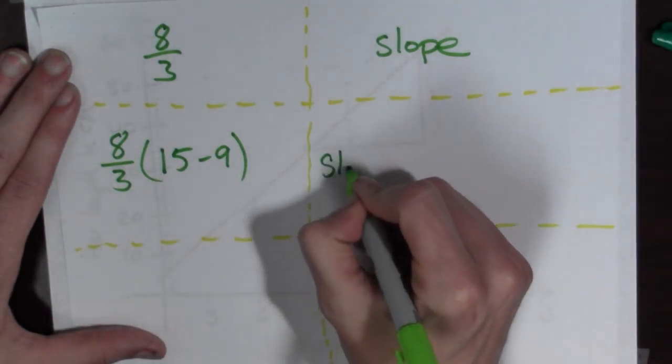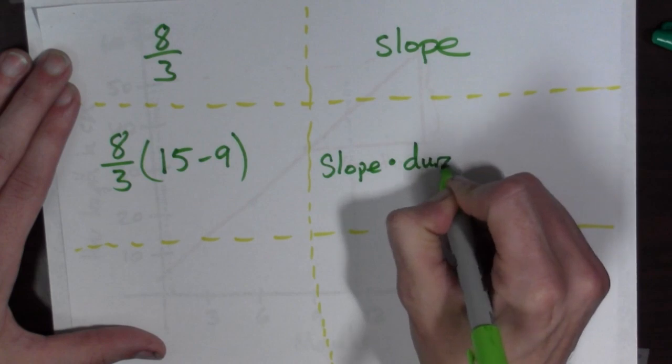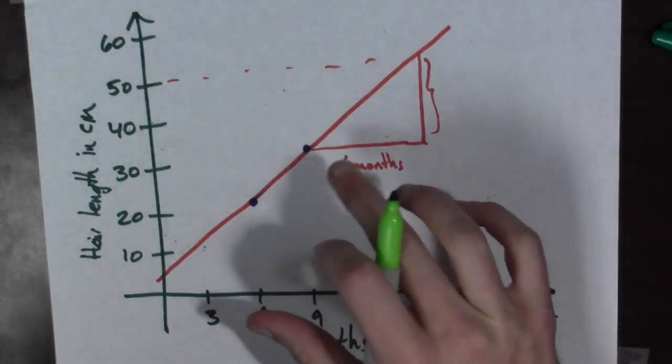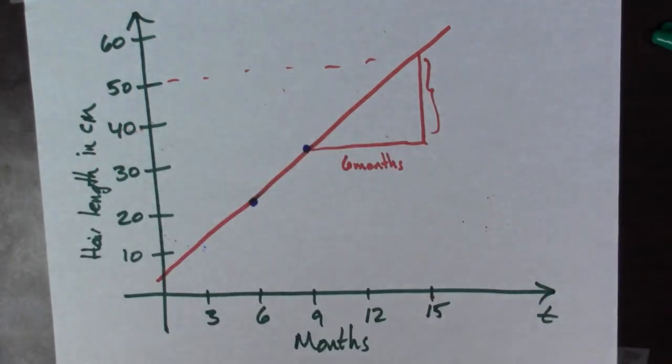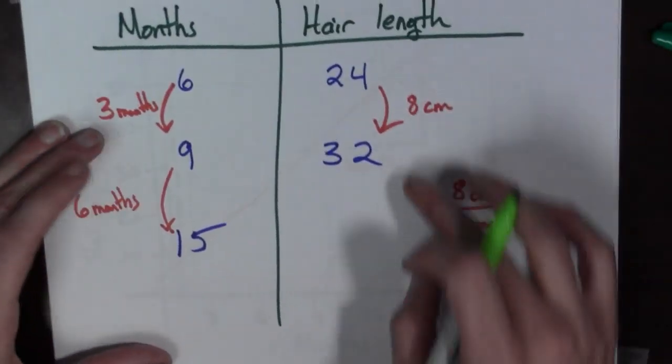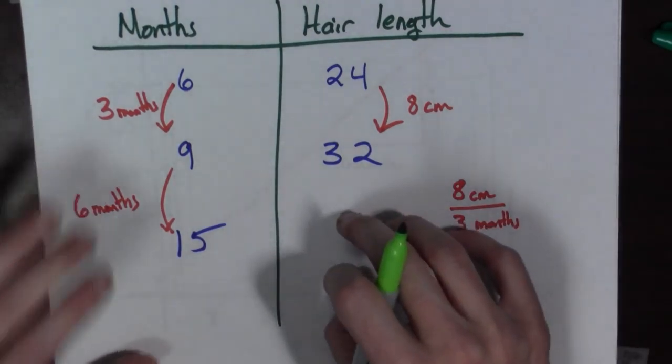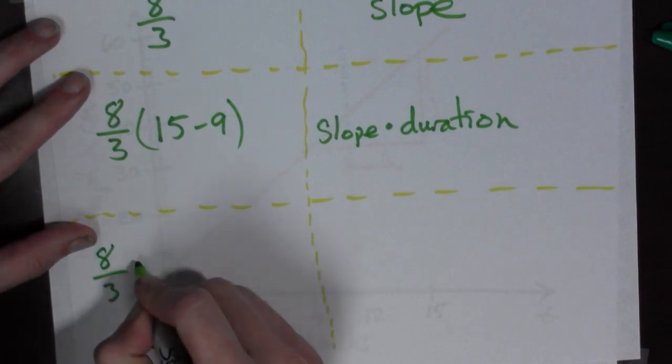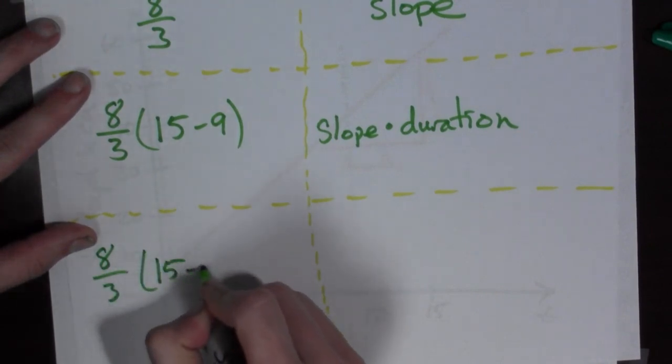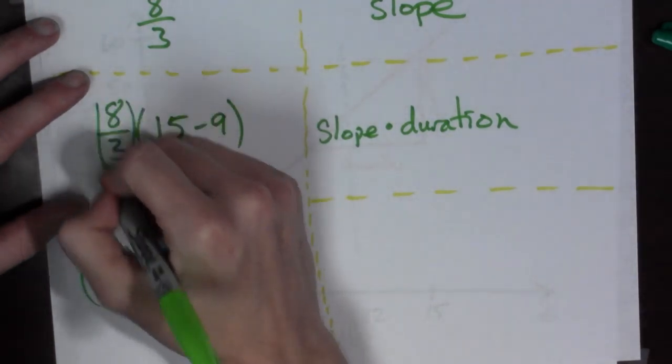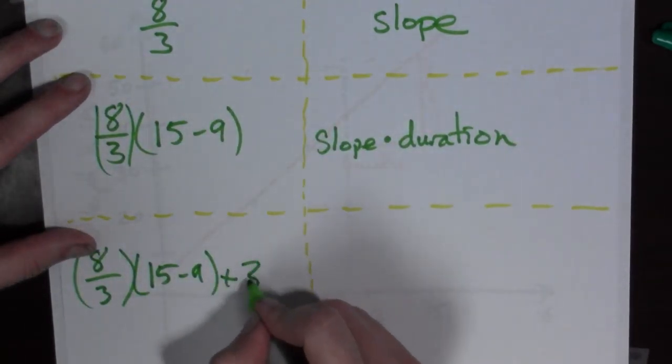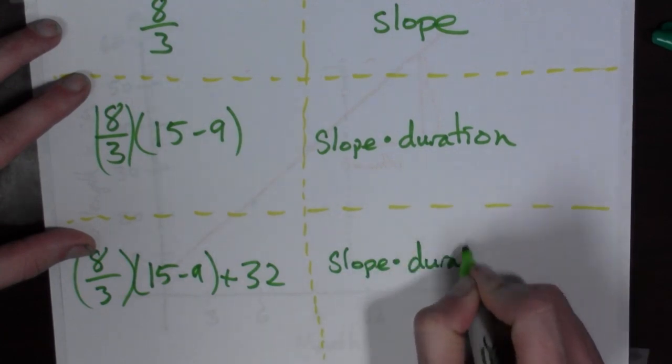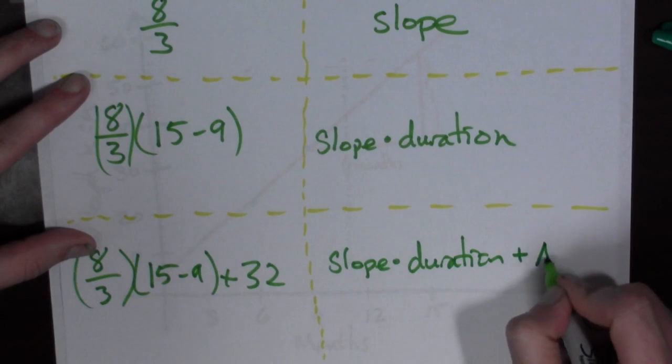And then finally, we didn't start at zero. We started with some height. We started actually at thirty-two centimeters. And then six months happened, and then we grew some more hair. So we have eight over three times fifteen minus nine, parentheses around this too just to be safe, plus thirty-two. And so this is slope times duration plus some amount.